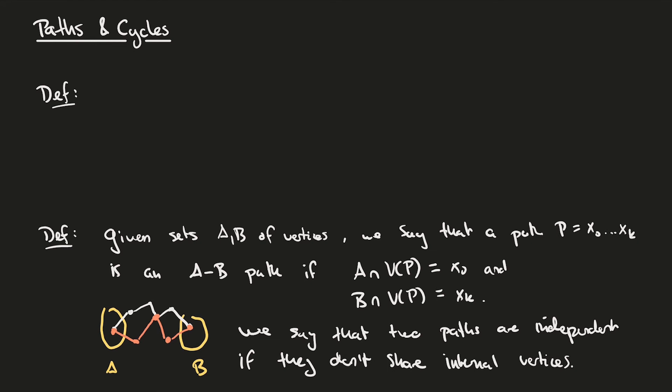Finally, if we're given a graph H, we say that a path P is an H path if P meets H exactly at its ends.